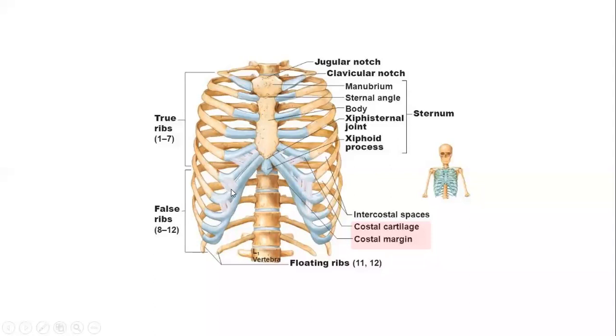Another important surface landmark of the thoracic wall is the costal margin and subsequently the subcostal angle. The costal margin is formed by the union of the costal cartilages from the 7th to 10th ribs. These costal cartilages from the 7th to 10th ribs on either side of the midline, right and left, form the costal margin.